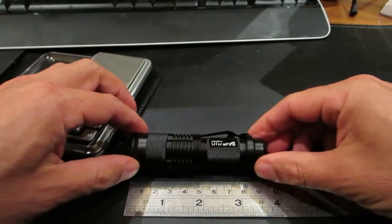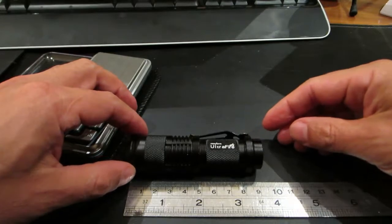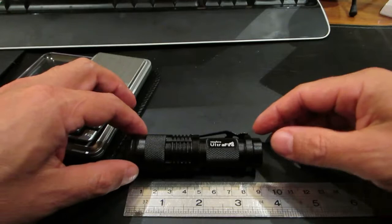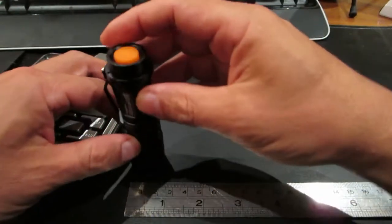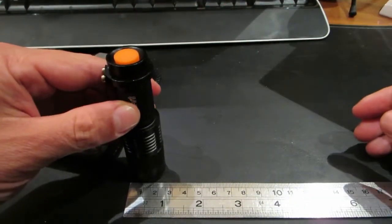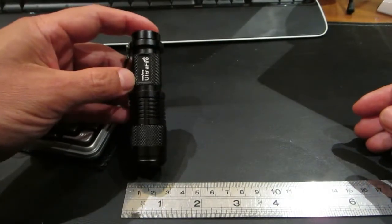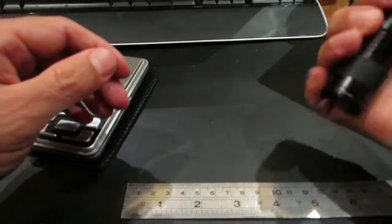In regards to the actual length of it, it's roughly about 90 millimetres or about three and a half inches in length. And in regards to width it's roughly about 22 millimetres or roughly about an inch. So pretty small overall.